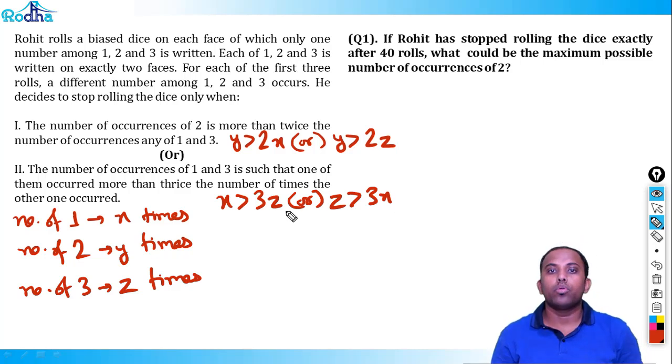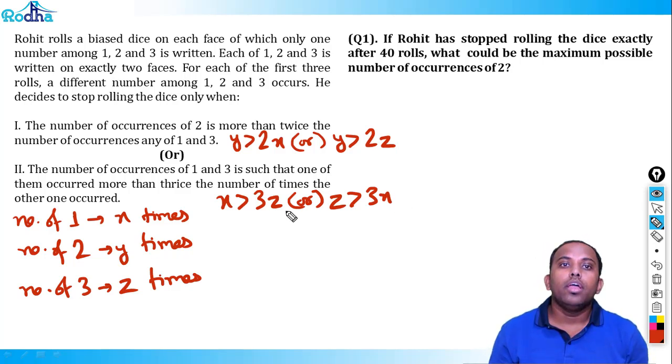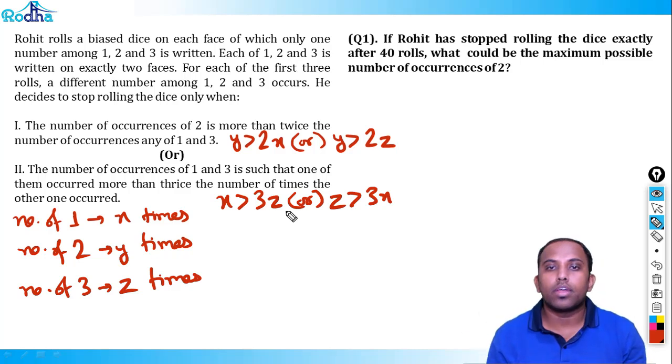When either condition is met, the rolling will stop. Rohit is continuously rolling as long as neither condition is satisfied.